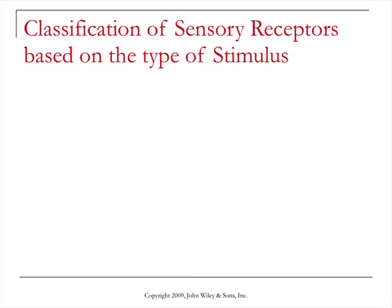We can also classify sensory receptors based on the type of stimulus. Mechanoreceptors are sensitive to mechanical stimuli like stretching and bending of cells. You would have these kinds of receptors in your skin for touch, in your joints for proprioception, and also in your blood vessels to help monitor their stretching.